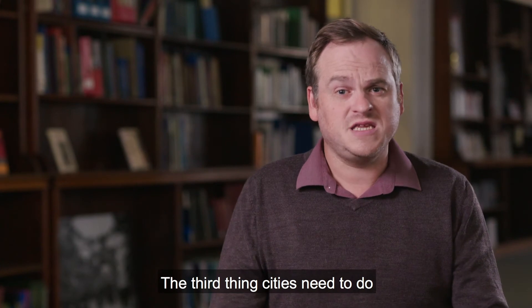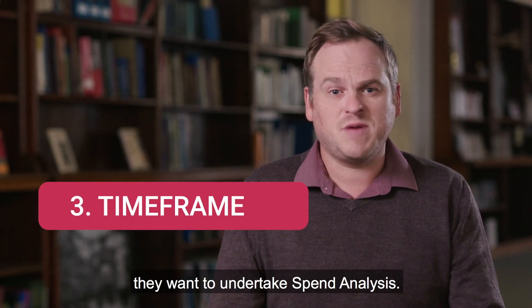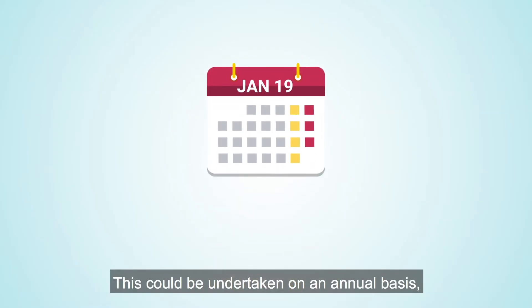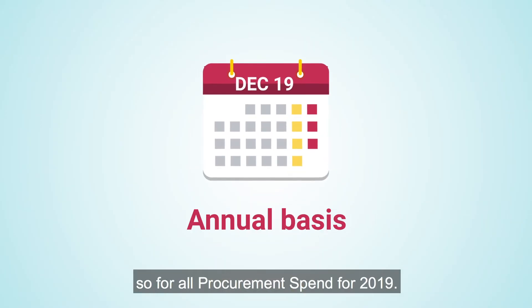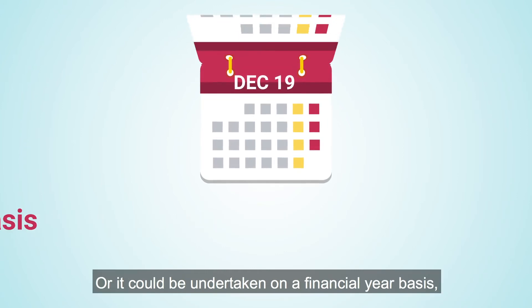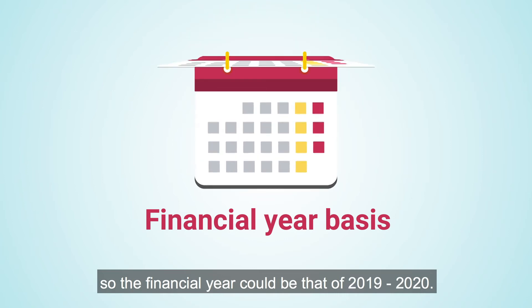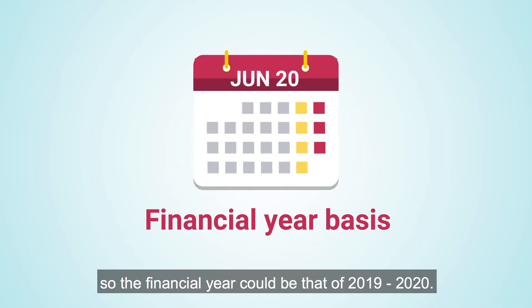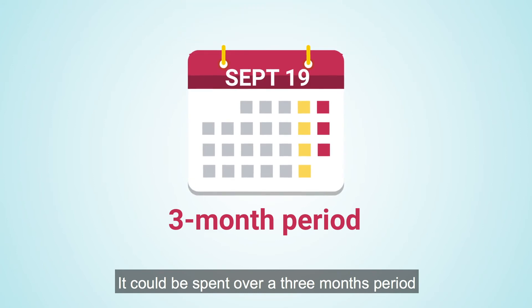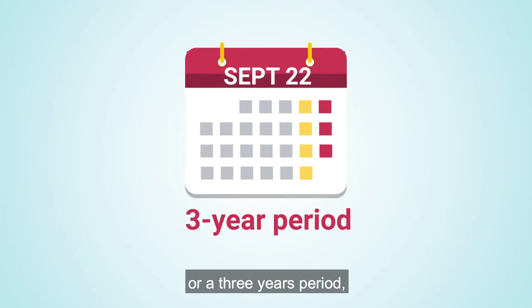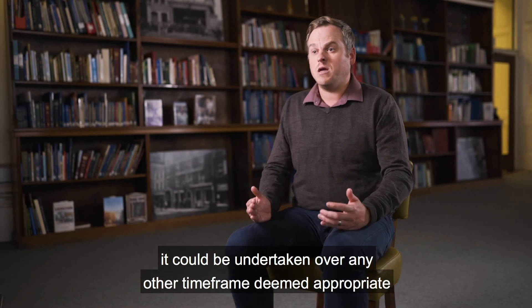The third thing cities need to do is decide over which time frame they want to undertake spend analysis. This could be undertaken on an annual basis, so for all procurement spend for 2019, or it could be undertaken on a financial year basis, such as 2019 to 2020. It could be spend over a three-month period or a three-year period, or any other time frame deemed appropriate.